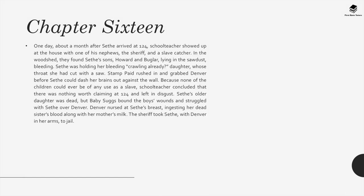Chapter 16: One day, about a month after Sethe arrived at 124, schoolteacher showed up at the house with one of his nephews, the sheriff, and a slave catcher. In the woodshed, they found Sethe's sons Howard and Bugler lying in the sawdust, bleeding. Sethe was holding her bleeding crawling-already daughter, whose throat she had cut with a saw. Stamp Paid rushed in and grabbed Denver before Sethe could dash her brains out against the wall. Because none of the children could ever be of any use as a slave, schoolteacher concluded there was nothing worth claiming at 124 and left in disgust. Sethe's older daughter was dead, but Baby Suggs pounded the boys' wounds. Denver nursed at Sethe's breast, ingesting her dead sister's blood along with her mother's milk. The sheriff took Sethe, with Denver in her arms, to jail.